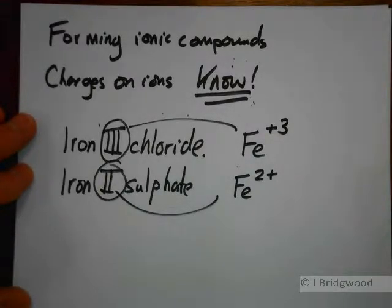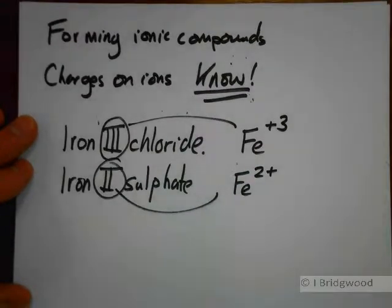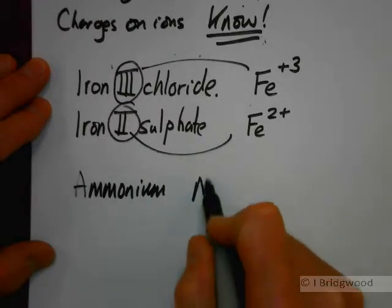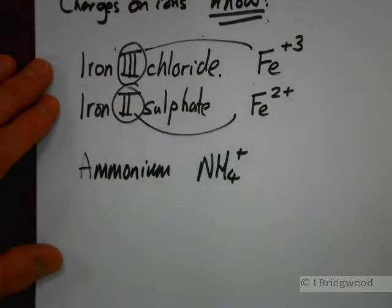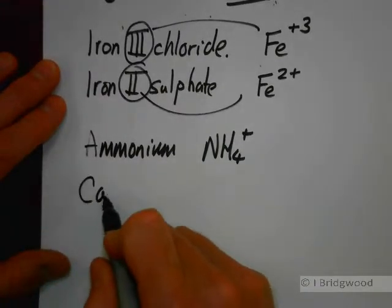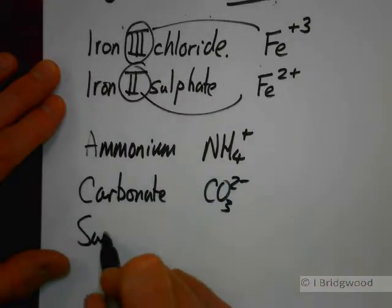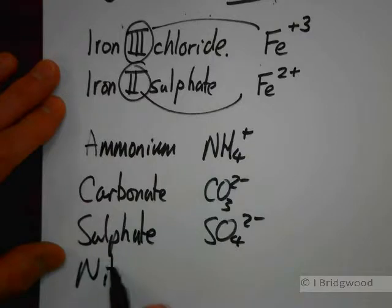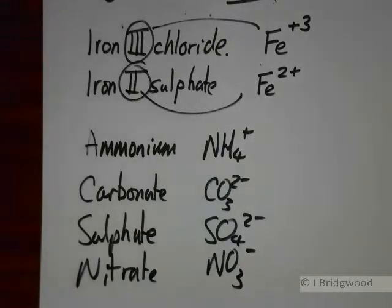You get some clues from the periodic table and from Roman numerals, but there are other things you just have to learn. For example, the ammonium ion is NH₄⁺ — no clues, you just have to learn it. There are plenty of others to learn as well: carbonate, CO₃²⁻; sulfate, SO₄²⁻; nitrate, NO₃⁻. It really is just a matter of knowing these.